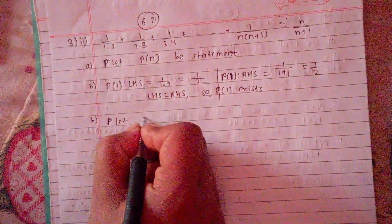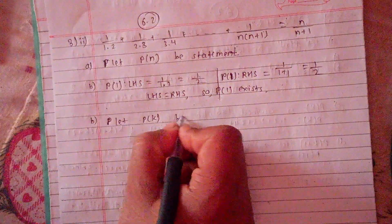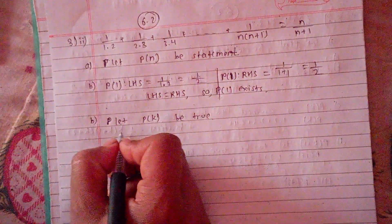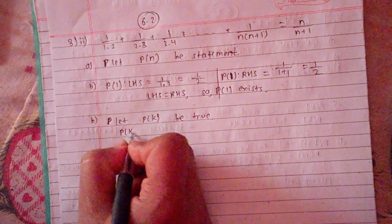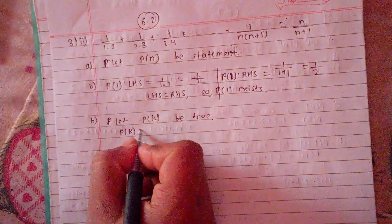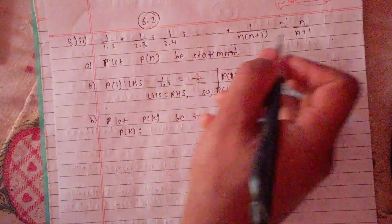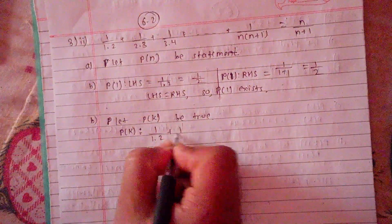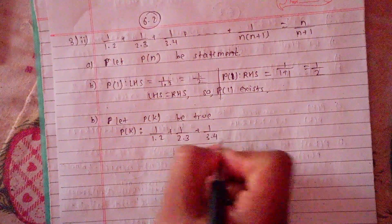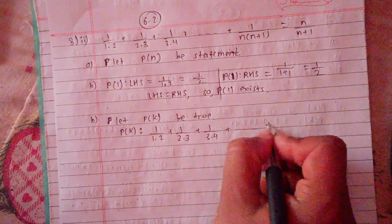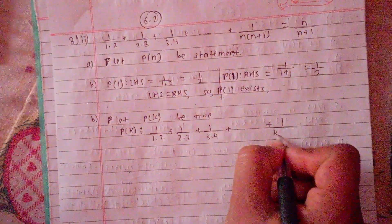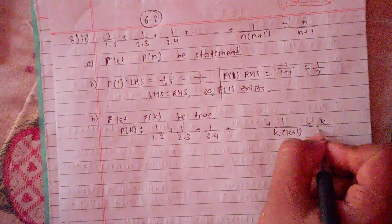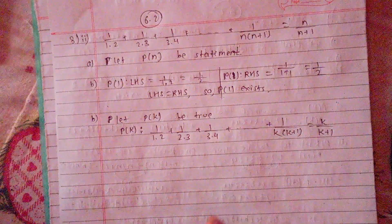Now let P(k) be true. This means: 1/(1·2) + 1/(2·3) + 1/(3·4) + ... + 1/(k(k+1)) = k/(k+1). This is our inductive hypothesis.